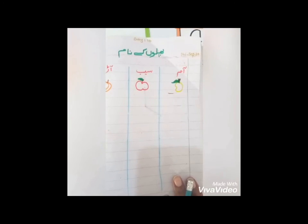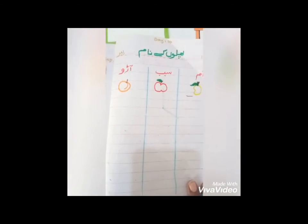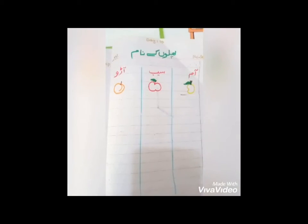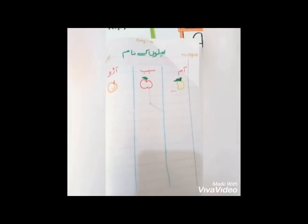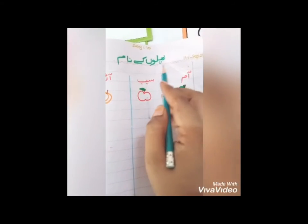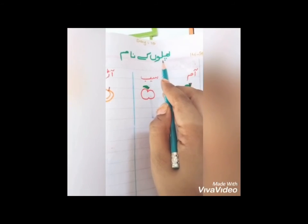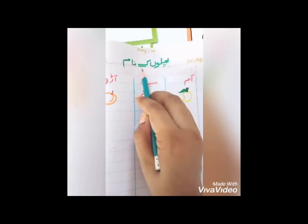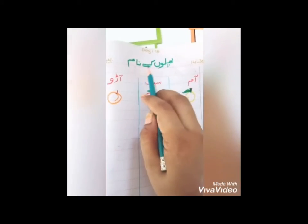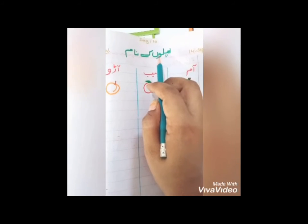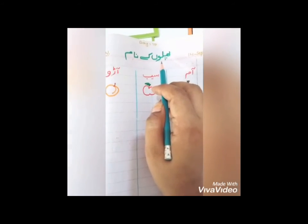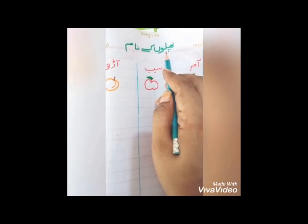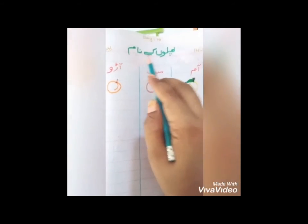Who all eat guava? 14 September 2020, Day 10, and today is Monday. Today Urdu work — now open your Urdu copies. Our Urdu work today is 'Fruits names' in Urdu. We read fruit names in English in the PP book, but in the Urdu copy we will do the work in Urdu.